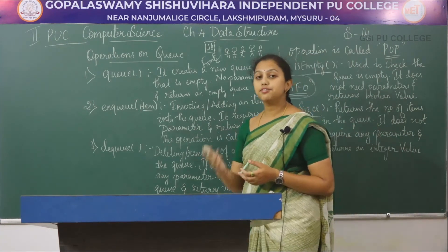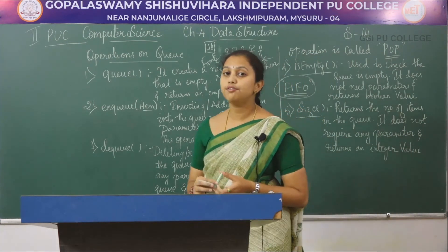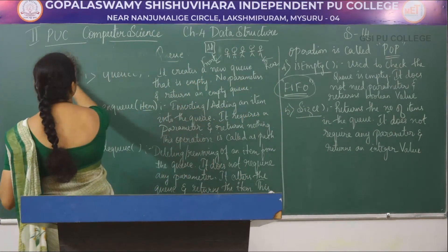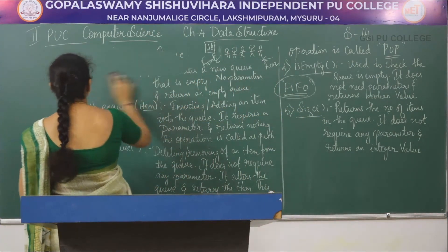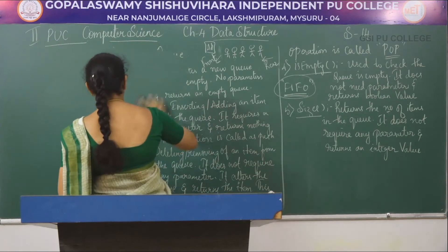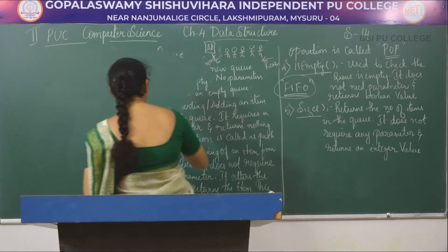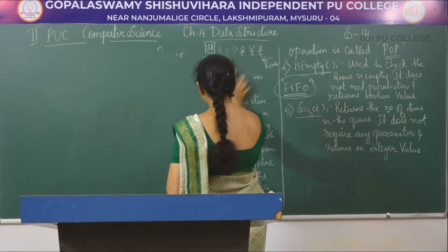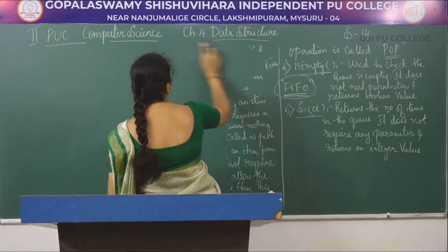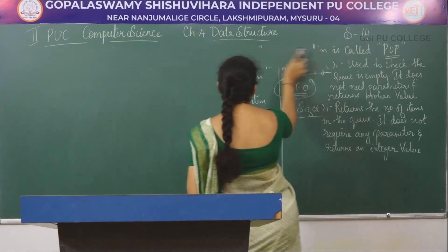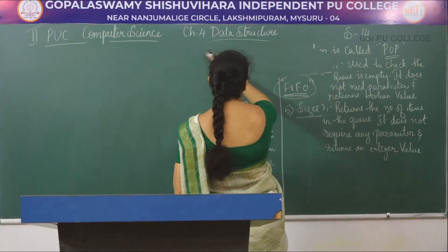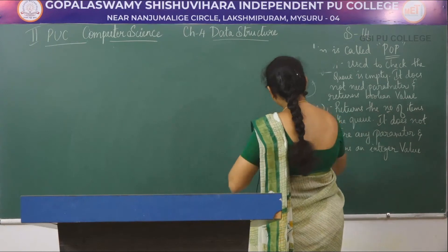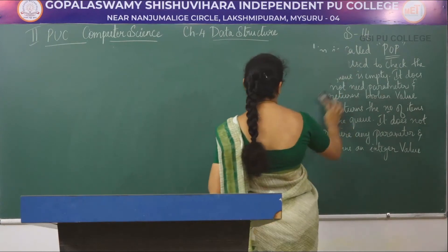Now let's see the different types of queues. The types are: simple queue, priority queue, circular queue, and double ended queue.